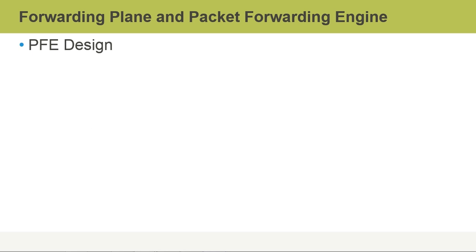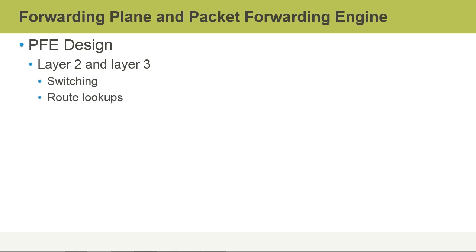The packet forwarding engine is architected to do Layer 2 and Layer 3 switching and route lookups. It's essentially designed to rapidly forward packets — that's its main goal.